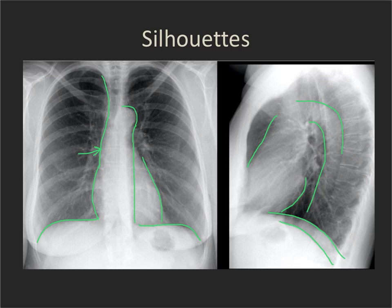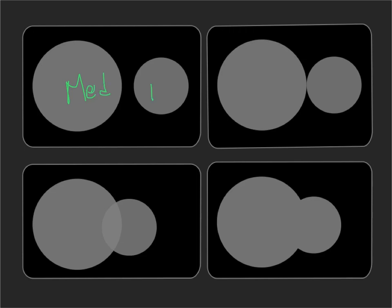These are normal air-soft tissue interfaces — normal silhouettes we should be able to see. Now let's look at four hypothetical situations. The gray circles are objects; let's call one the mediastinum and the other an area of pneumonia within the lung, with the black areas all being air. In situation one, we can see the silhouette all the way around the pneumonia and all the way around the mediastinum, because there is no interruption of that normal air-soft tissue interface.